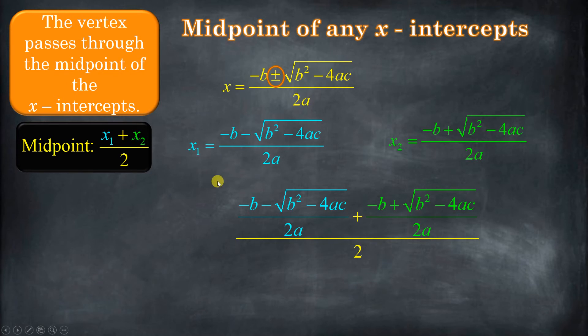Now that might look overwhelming, but just stay with me here. Check this out. Here's what we got. x1 plus x2, that's x1 right here, plus x2 right here, all of it divided by 2. Now, this is a fraction, but they already have a common denominator of 2a. So it's a lot easier to write that as a single fraction, like that.